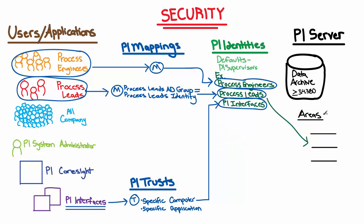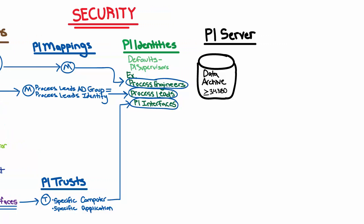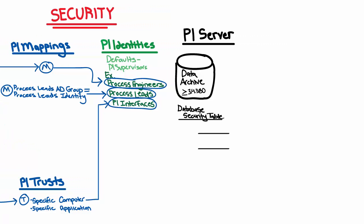To start off with, let's define the different security areas on the Data Archive. On the Data Archive, there is something called the Database Security Table. This table is divided into different areas that correspond to groups of related tasks. For example, one of them is PI Backup, which deals with the permissions for who can see the results of previous backups or perform backups of the PI Data Archive.